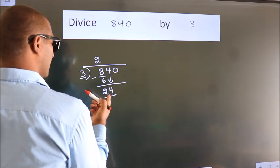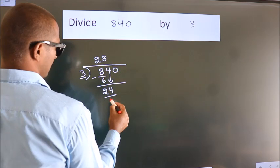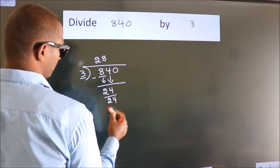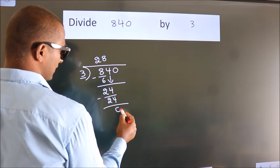When do we get 24? In 3 table, 3 times 8 is 24. Now we subtract. We get 0.